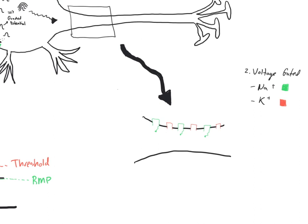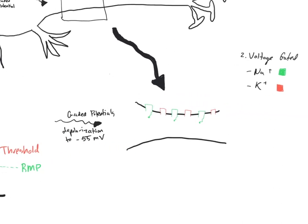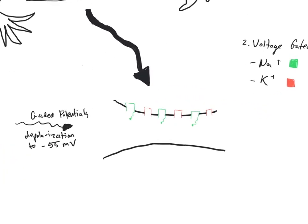Now that everything is drawn, let's talk about what happens when the graded potentials summate to trigger the action potential. Graded potentials come in and will trigger the firing of the action potential once it meets threshold. Going back to our chart, minus 55 is where we're going to see the first of our sodium voltage-gated channels opening. As those graded potentials summate and we hit threshold, those voltage-gated sodium channels will open, allowing for the influx of sodium.